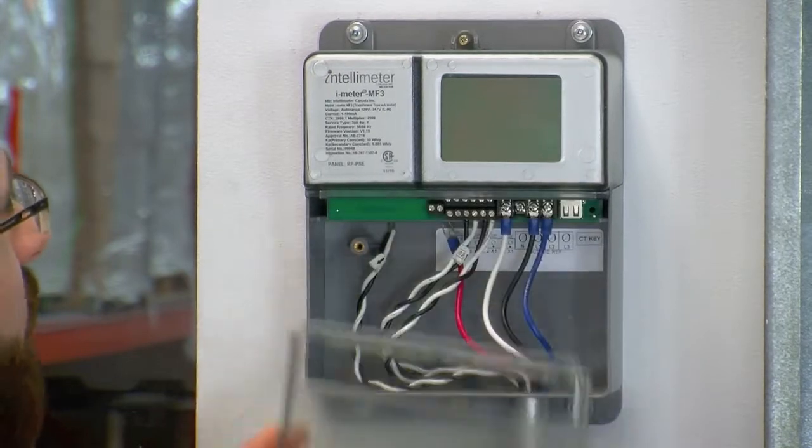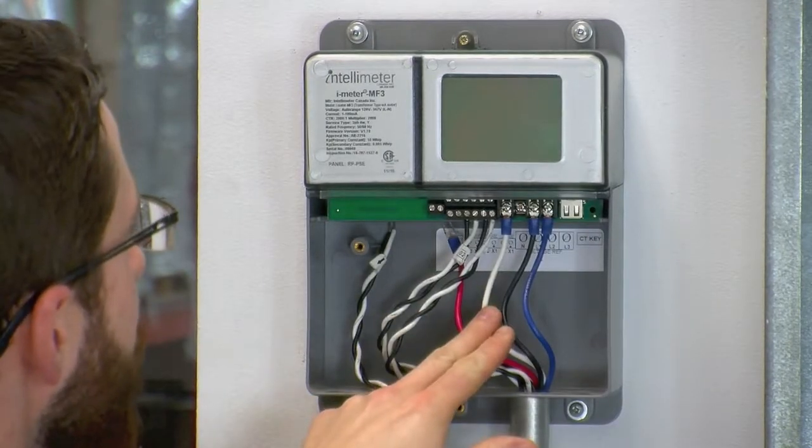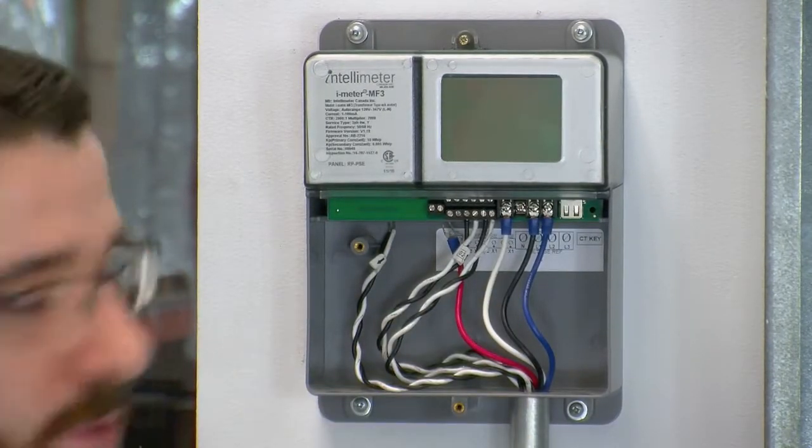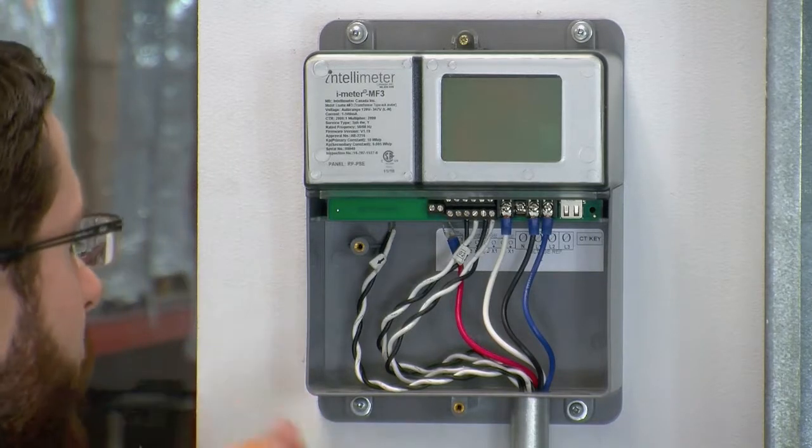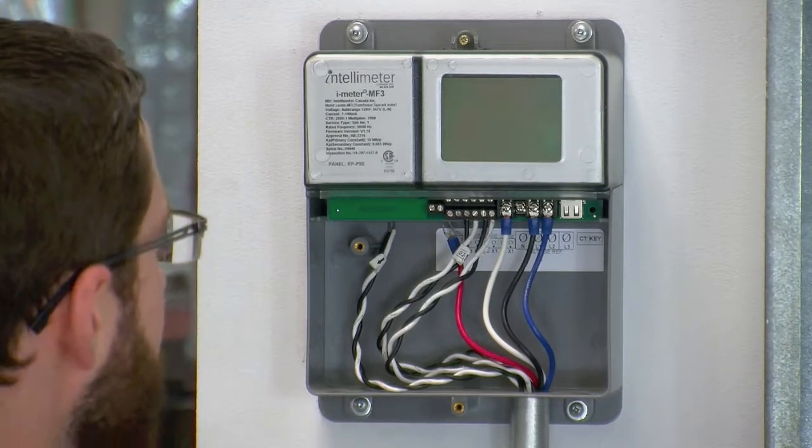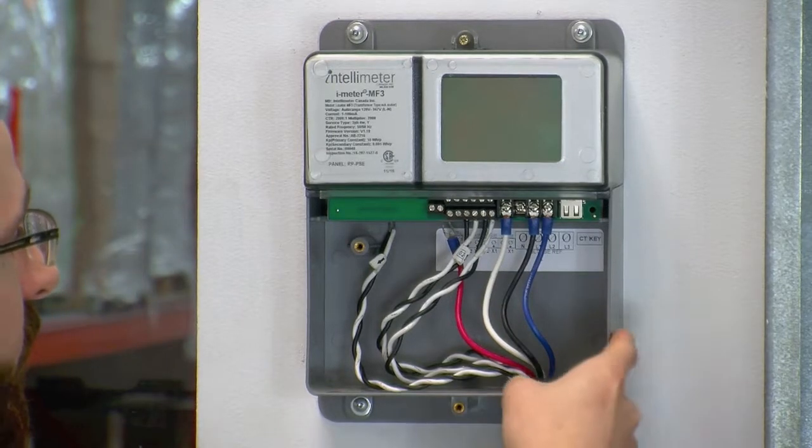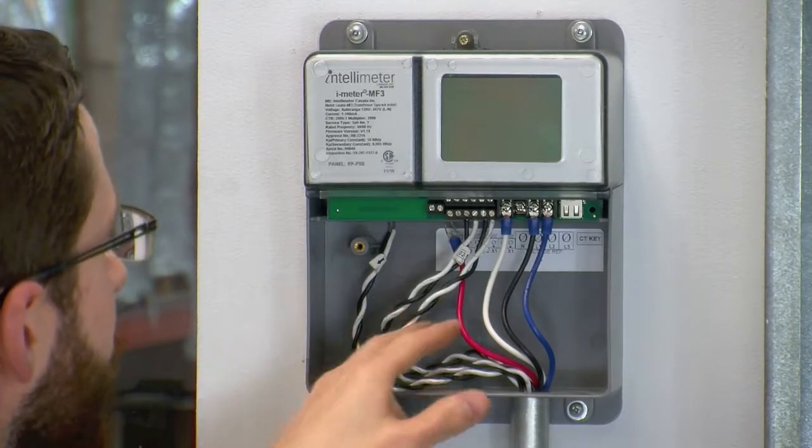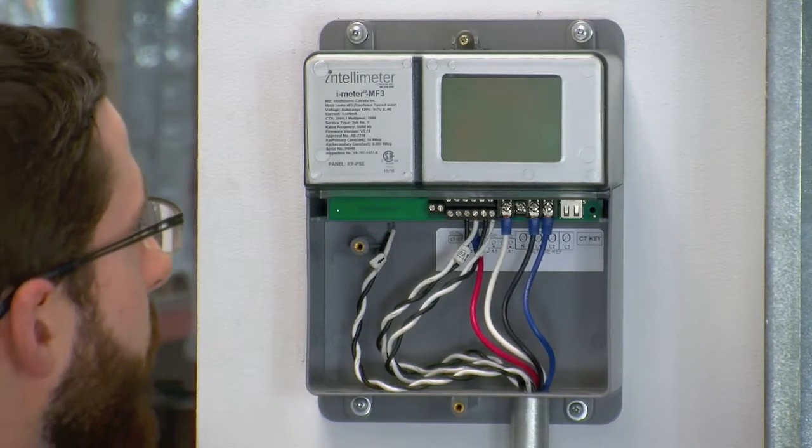As you can see, we now have our CT leads and reference voltage wires pulled through the conduit into the enclosure. For the sake of this demonstration video, we've only pulled them through the one piece of conduit, but personally, I would suggest adding a second piece of conduit so that you can keep your CT leads and reference voltage wires separate. But for now, we're just going to use the one.